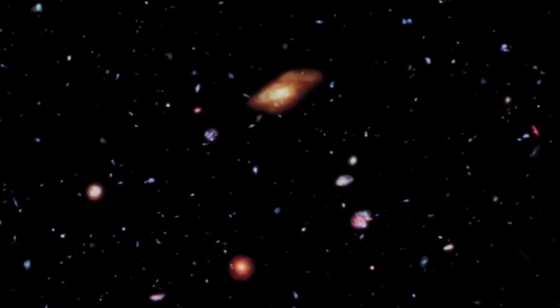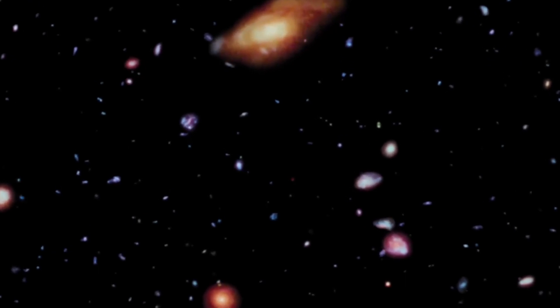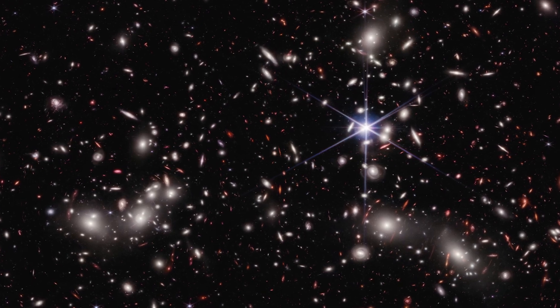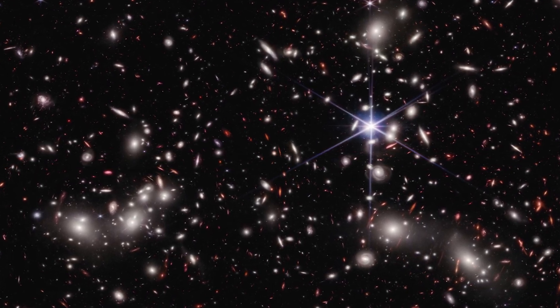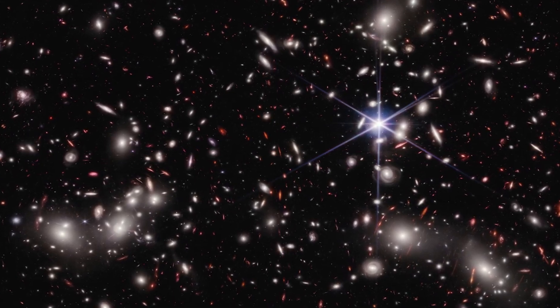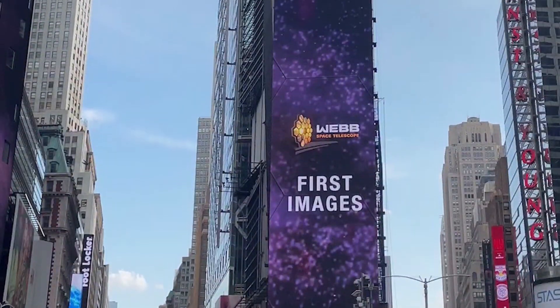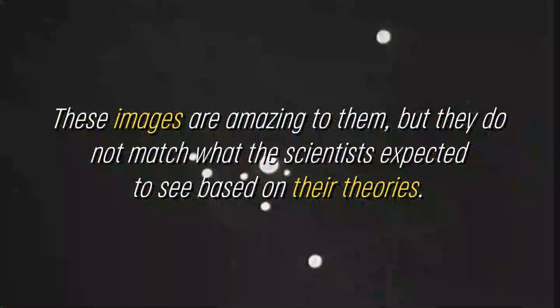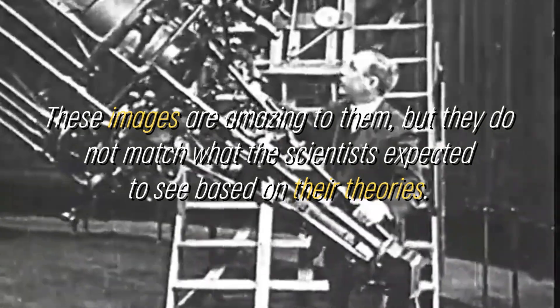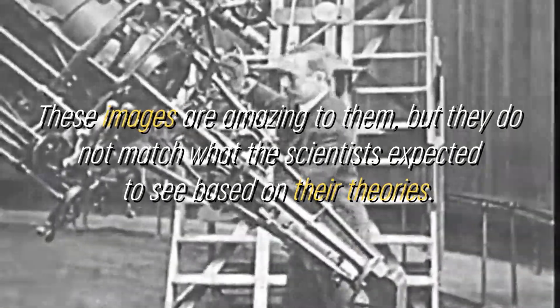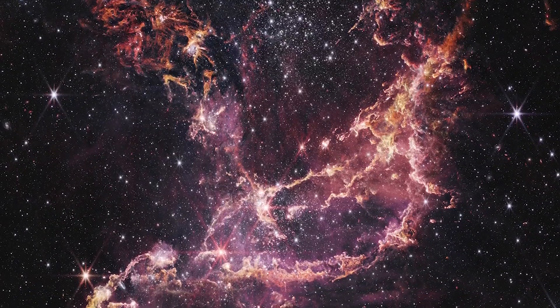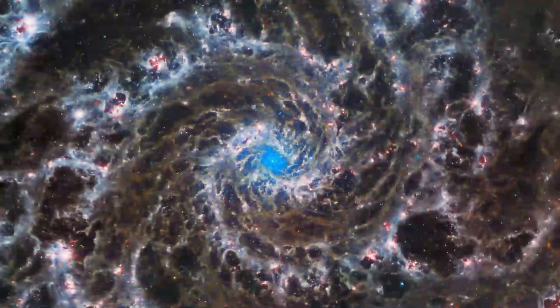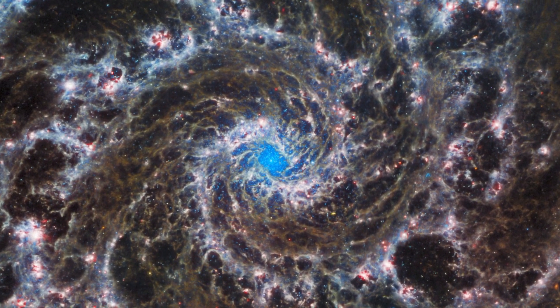The images of new galaxies captured by the James Webb Telescope are absolutely stunning. In a single image, we can see hundreds of galaxies, all together, and the beauty and power of these photos are stunning, something that cannot be overlooked. However, what seems to amaze the average person is precisely the opposite for researchers. These images are amazing to them, but they do not match what the scientists expected to see based on their theories. In fact, many more galaxies are being seen than expected, and these galaxies are different from the rest. They are smaller than imagined and have a truly remarkable age.